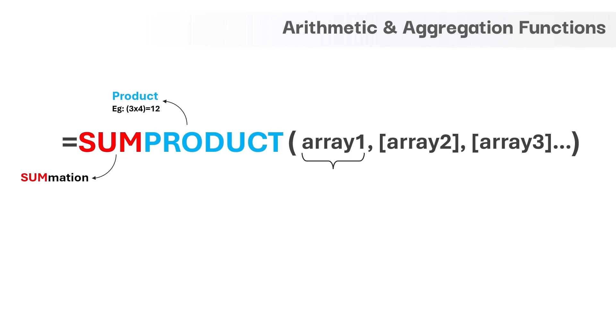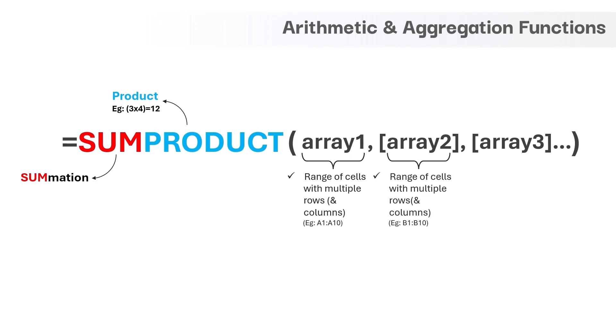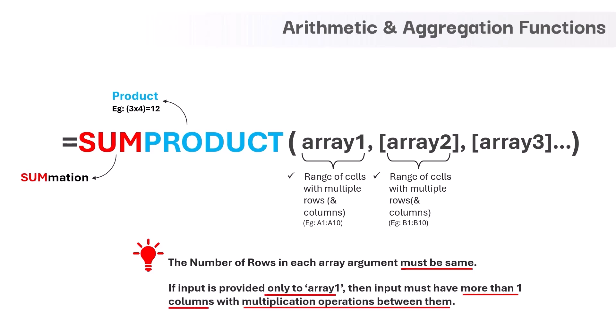The first argument is array1, and it is a set of data with multiple rows and sometimes multiple columns too. The second and remaining arguments are array2, array3, and so on — similar data sets go as input to these arguments as well. The number of rows in each array argument must be the same; this is the prerequisite to use this function. Also, if we provide input to only the first mandatory argument, array1, then that input must have more than one column — obviously, to perform multiplication between the two column values.